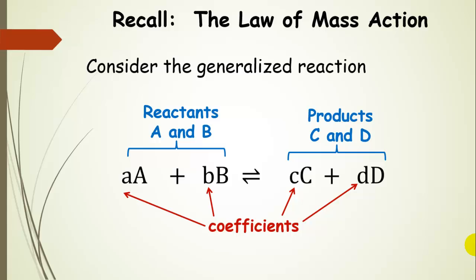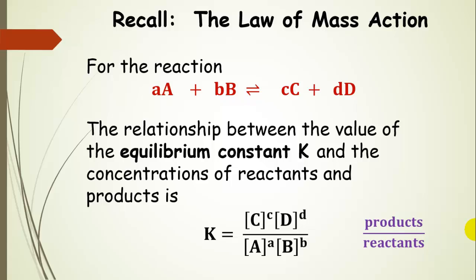Before we get started, let's remind ourselves of a few things we've already talked about. We have reactants A and B, where lowercase a and lowercase b are their coefficients, and a similar situation exists for products C and D, with coefficients lowercase c and lowercase d. We discussed this in context of the law of mass action, demonstrating the relationship between the equilibrium constant K and the concentrations of products and reactants — where the powers are the stoichiometric coefficients. This is the equilibrium constant expression, and it's always products over reactants.